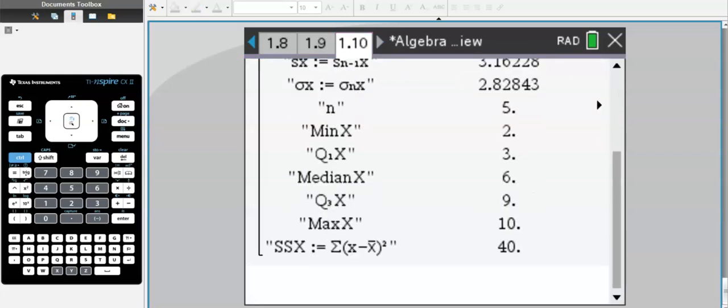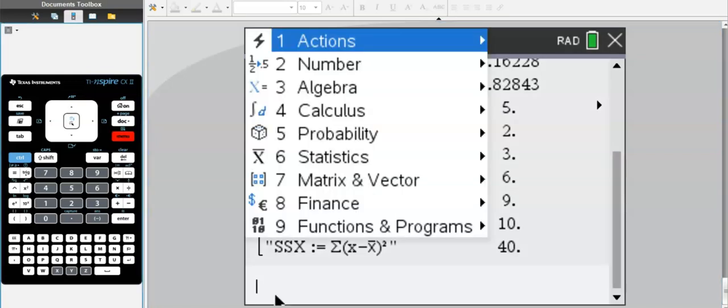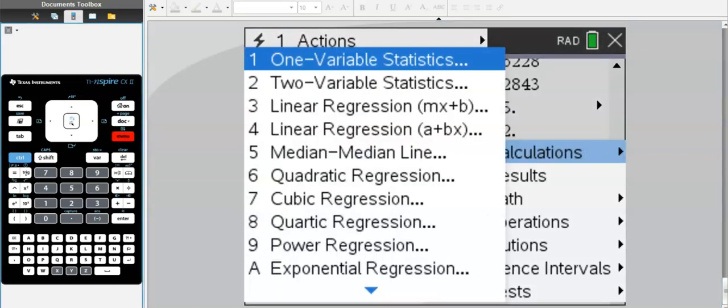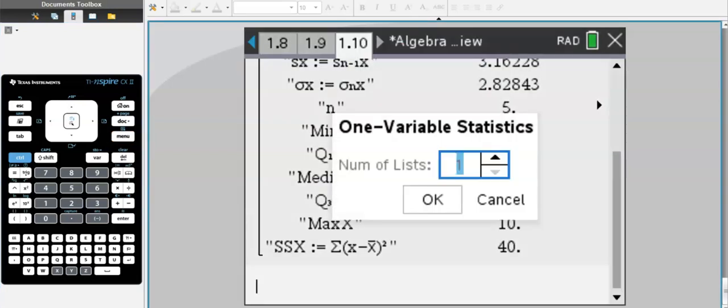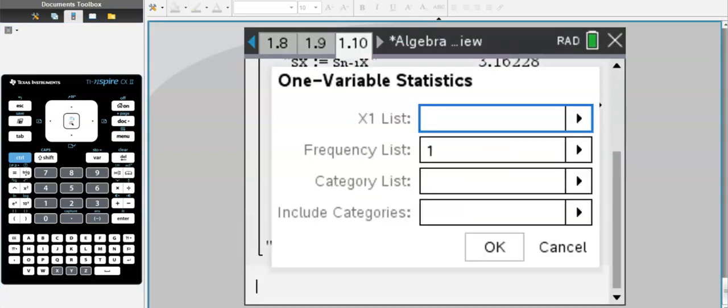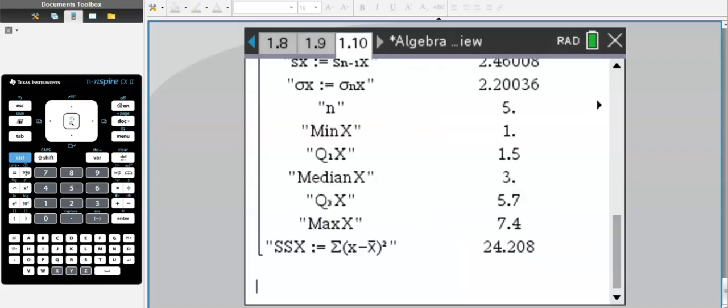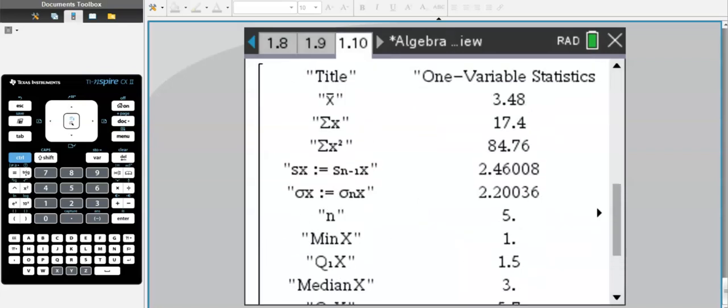Now one final thing we can do is statistics. Let's say we have that value t and we want to find the average value of t. We're going to do statistics, stat calculations, and one variable statistics. Now we have one list and we're trying to find t. So t is from that list that we made in the other page and that's how you're going to find this.